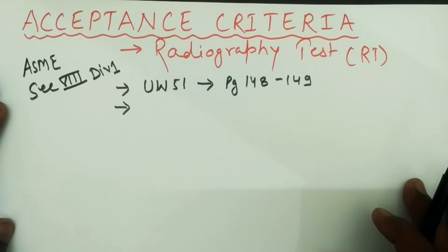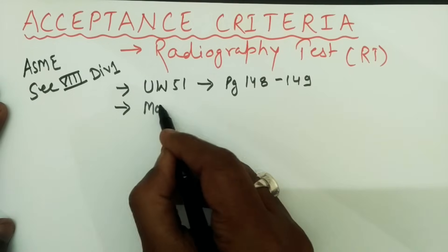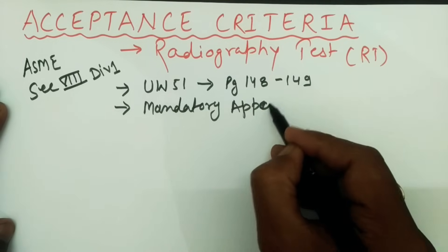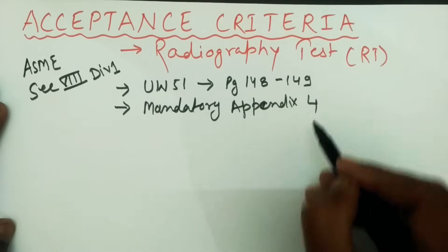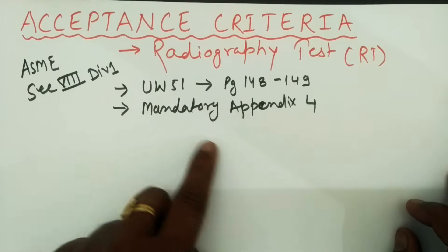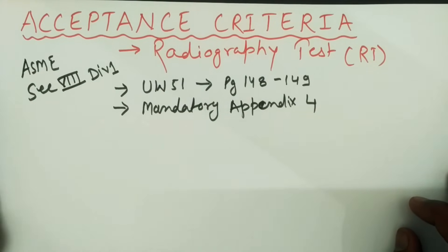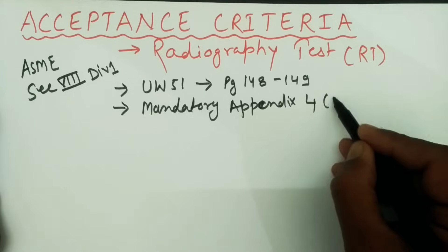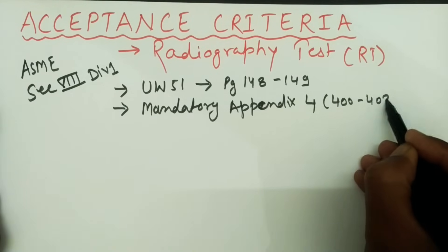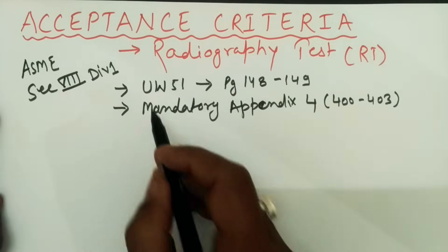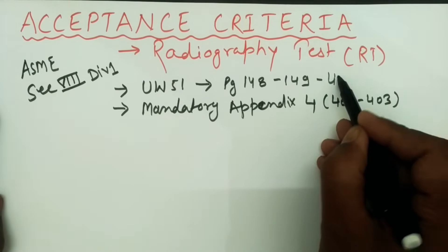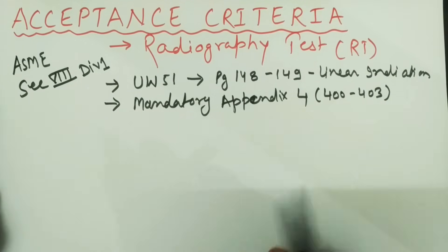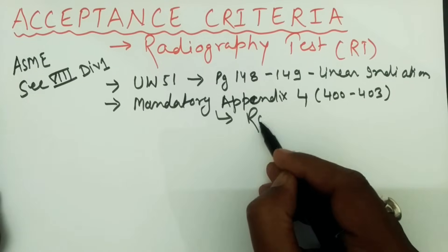We also need to refer to Mandatory Appendix 4, where you will also find acceptance criteria for radiographic test. Mandatory Appendix 4 can be found on page numbers 400 to 403. UW-51 is mostly for linear indications, and Mandatory Appendix 4 is for rounded indications.